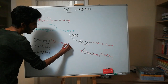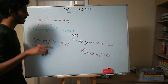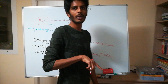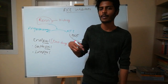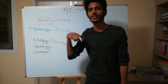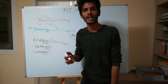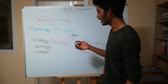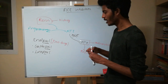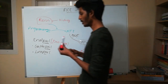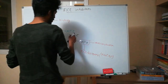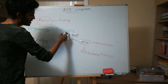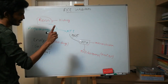Among all the '-pril' drugs which are ACE inhibitors, enalapril is a prodrug. A prodrug is inactive — it goes into the body, undergoes metabolism, and gives an active metabolite which works as an ACE inhibitor.